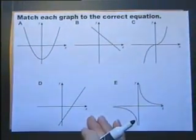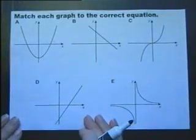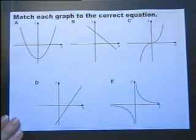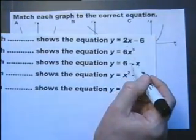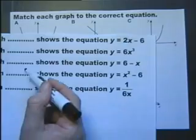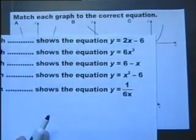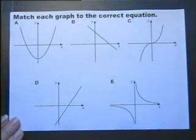Match each graph to the correct equation. So we're actually given the equation. There are 5 of them. And one of them is a, one of them is b and so on. And we've got to deduce which is which. So let's have a little look at these graphs.